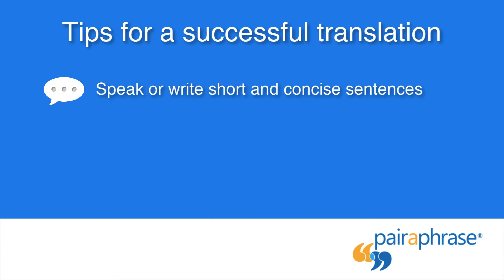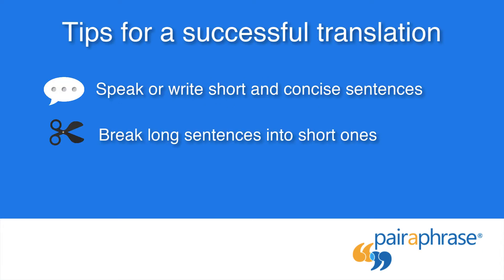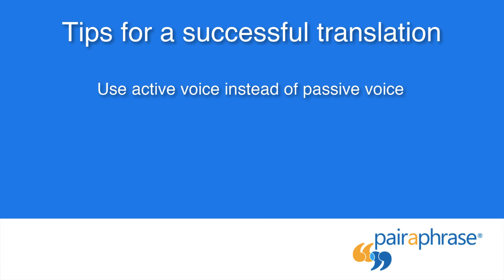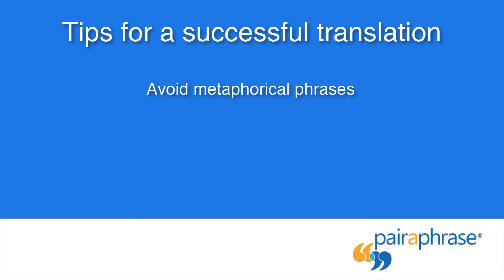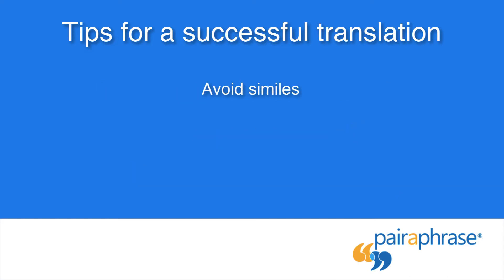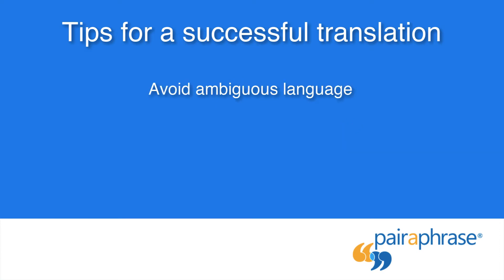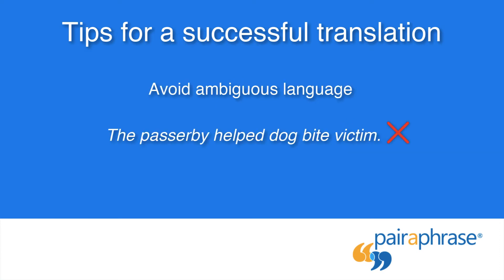For instance, speak or write short and concise sentences and break long sentences into short ones. Use active voice instead of passive voice — for example, "the dog chased the ball" versus "the ball was chased by the dog." Avoid metaphorical phrases such as "piece of cake" and similes such as "he is as strong as an ox." Avoid ambiguous language such as "the passerby helped dog bite victim."